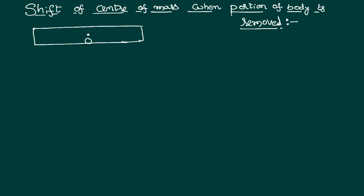Let the mass of the entire system be equal to M. Now, if we remove a small portion of the mass — let the mass that we are removing be small m — that removed portion will have the center of mass somewhere within that removed portion. Let that point be equal to C2.